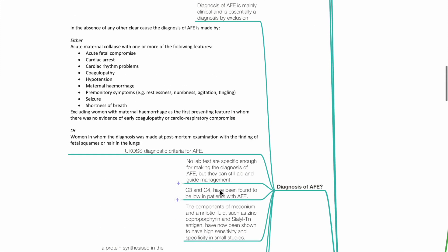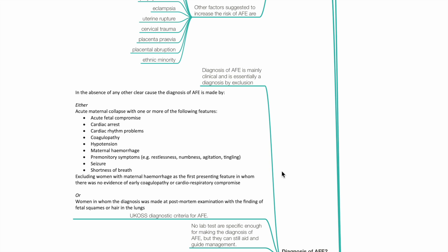How is AFE diagnosed? The diagnosis of AFE is mainly clinical and is essentially a diagnosis by exclusion. The UK UKOSS diagnostic criteria for AFE states that in the absence of any other clear cause, the diagnosis of AFE is made by either acute maternal collapse with one of the following features: acute fetal compromise, cardiac arrest, cardiac arrhythmias, coagulopathy, hypotension, maternal haemorrhage, premonitory symptoms, seizures or shortness of breath. Excluding women with maternal haemorrhage as the first presenting feature in whom there was no evidence of early coagulopathy or cardiorespiratory compromise, or in women in whom the diagnosis was made at post-mortem examination with findings of fetal squamous cells or hair in the lungs.